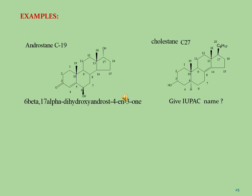Here are two examples relevant to IUPAC names of steroid molecules. In the first example, the total number of carbon atoms is 19 and the molecule is androstane. By using IUPAC rules, we have given the name of this molecule as 6β,17α-dihydroxyandrost-4-en-3-one.